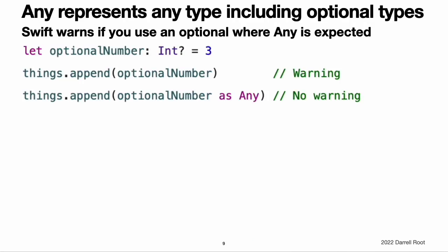Note: the Any type represents values of any type, including optional types. Swift gives you a warning if you use an optional value where a value of type Any is expected. If you really do need to use an optional value as an Any value, you can use the AS operator to cast the optional to Any, as shown here.